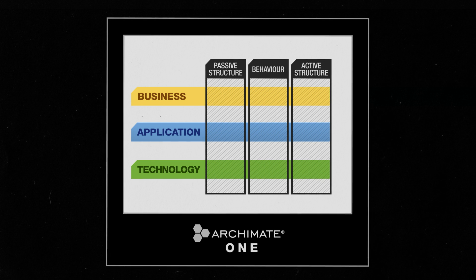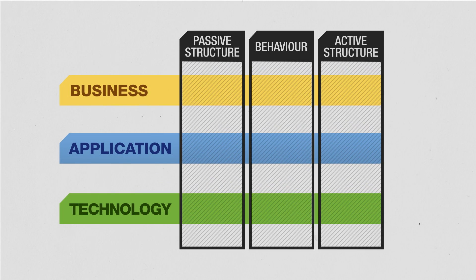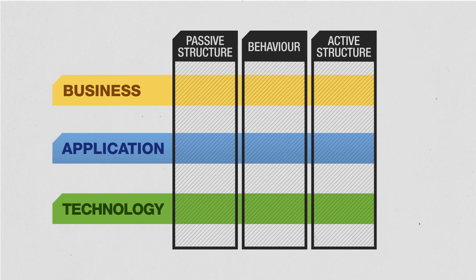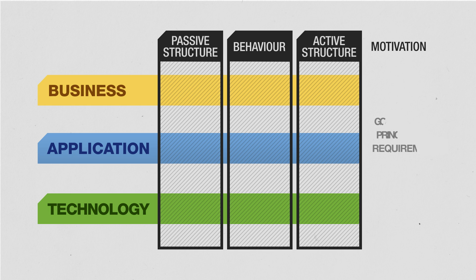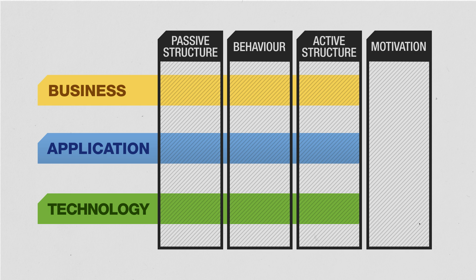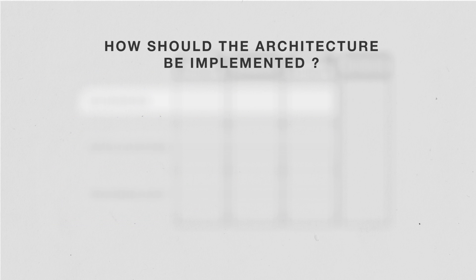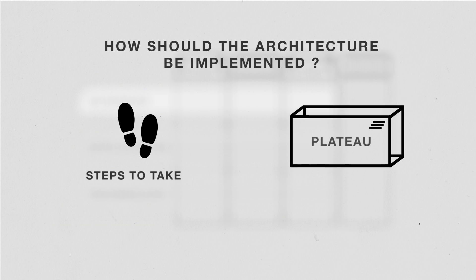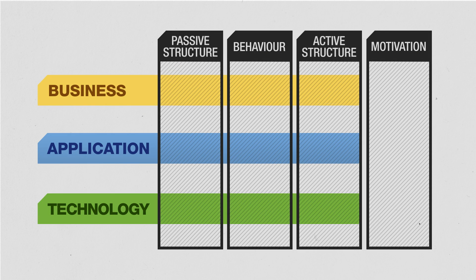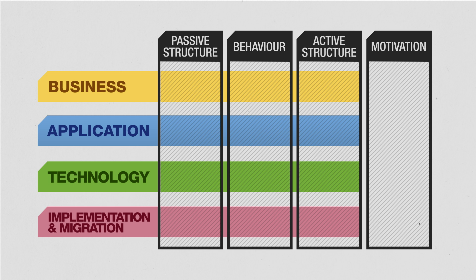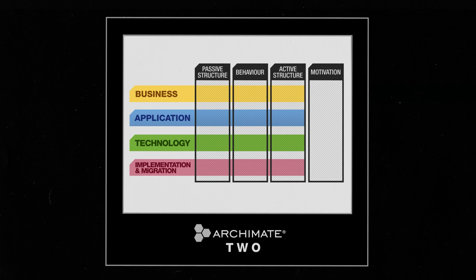People soon learned that Archimate 1 covered the core of the architecture, but not the motivation behind the architecture — things like your goals, your principles, and your requirements. So this was the first addition made. Experience also showed that people wanted to describe how the architecture should be implemented: steps to take, plateaus, and which work packages are part of the effort. An implementation and migration layer was introduced. This was Archimate 2.